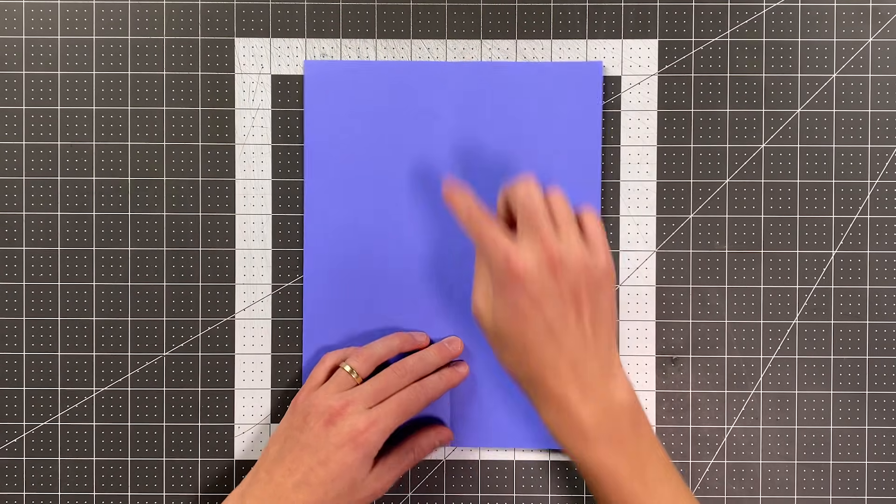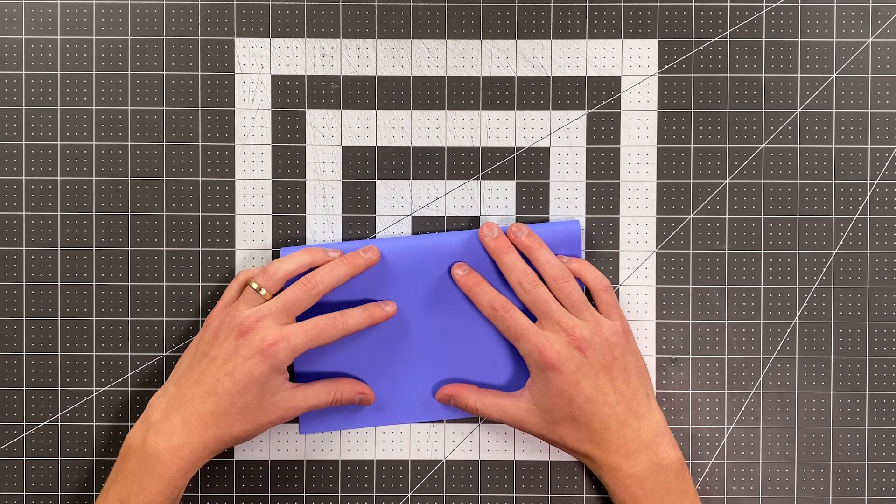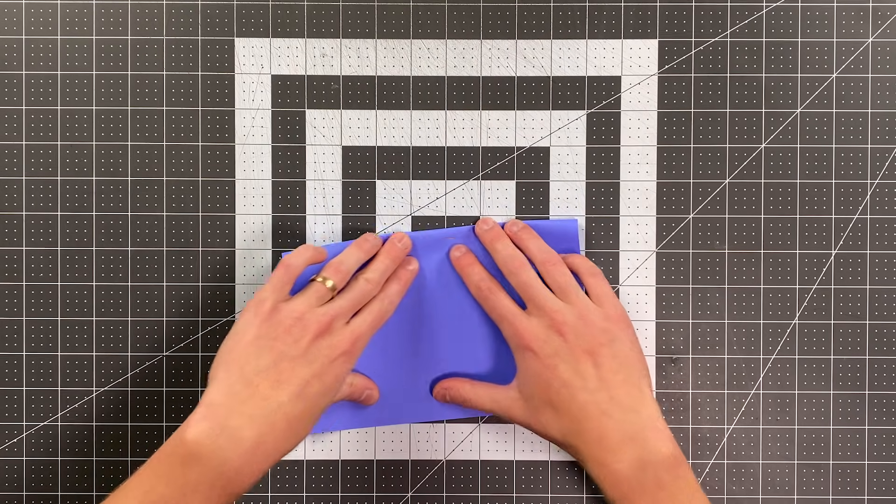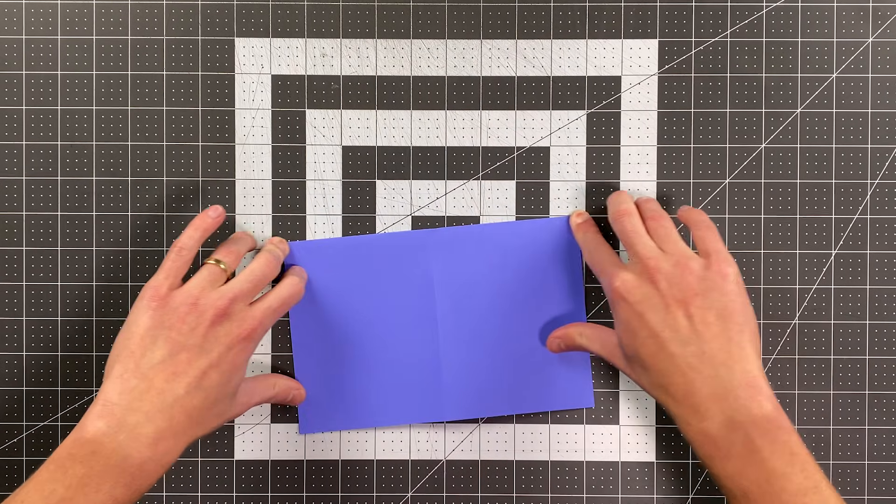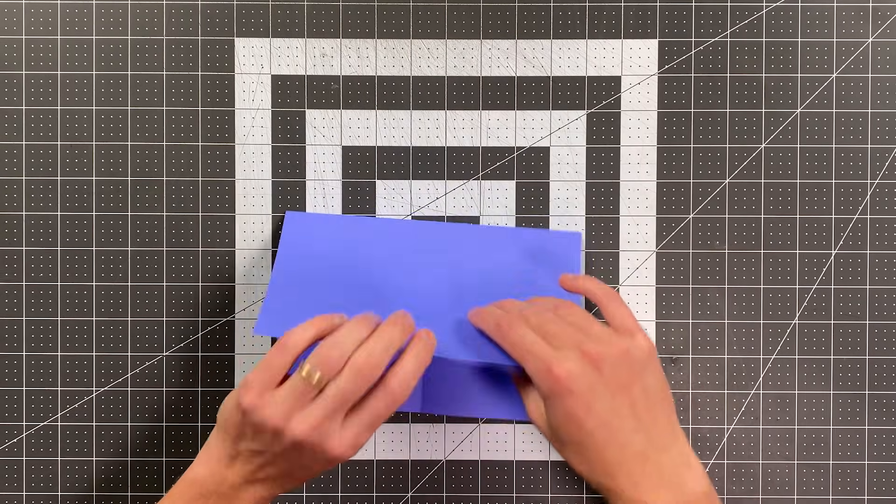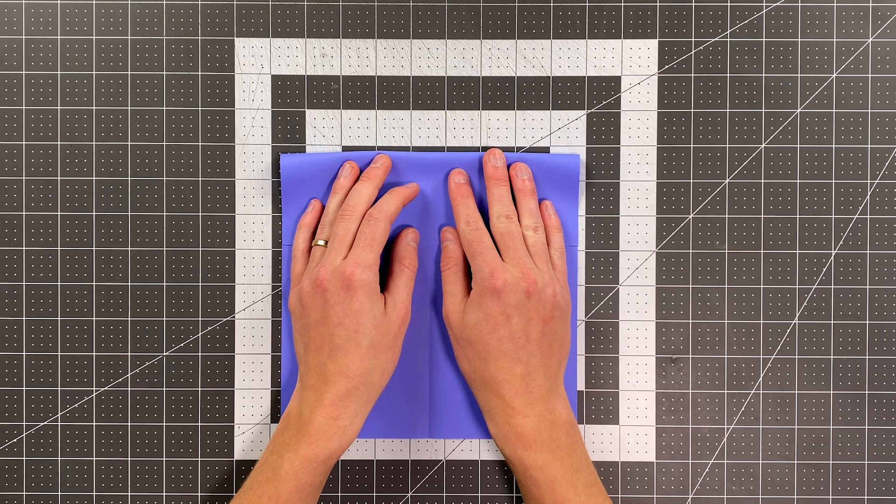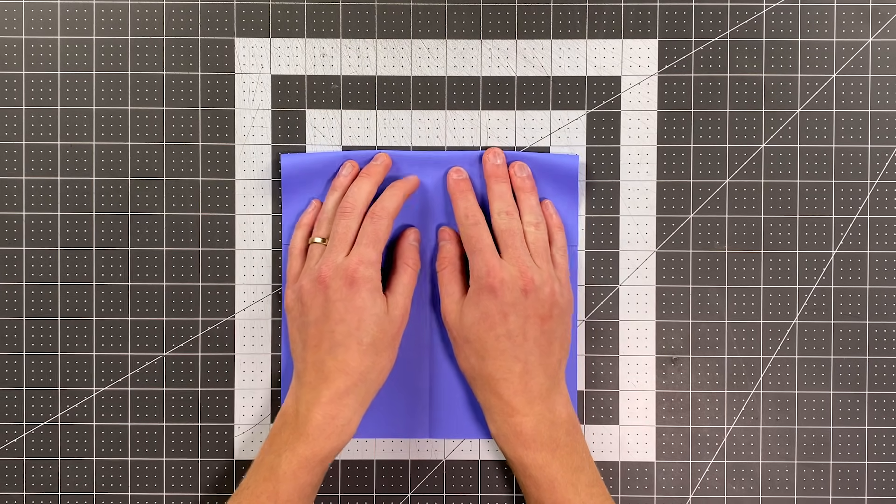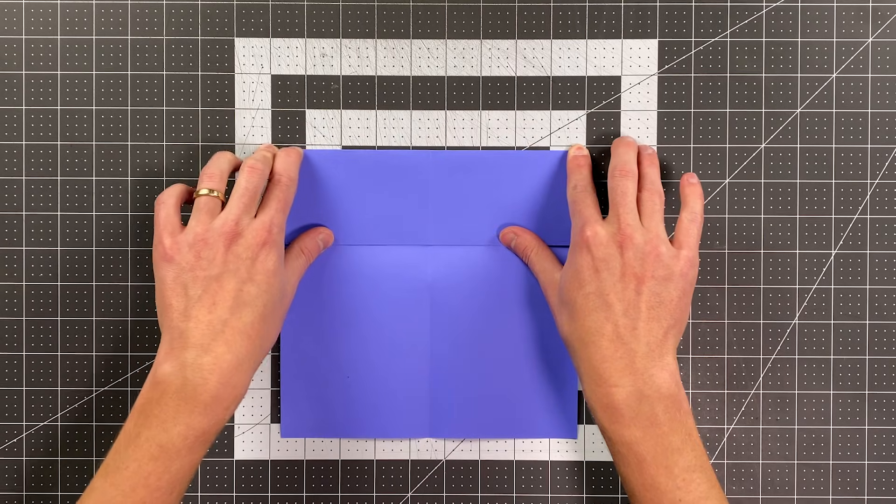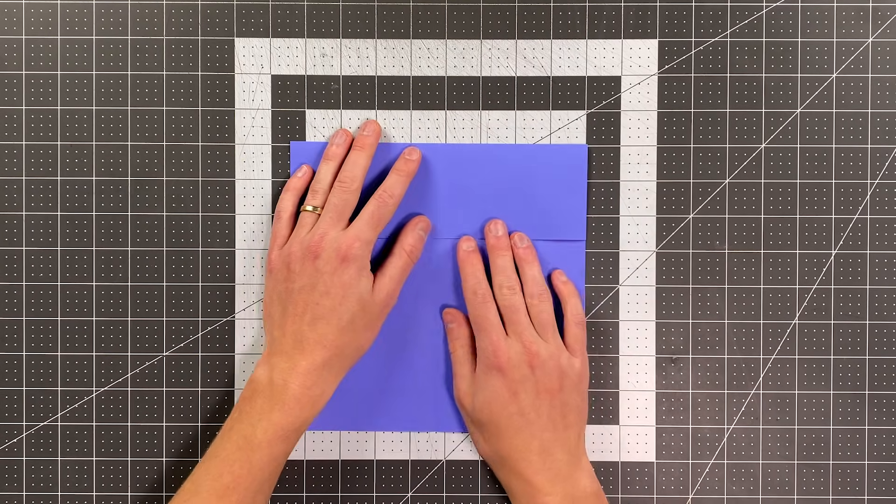Open it up, and now you'll fold your top edge to the bottom. Open it up once again, and now just fold your top edge to that crease you just made, and your paper should look like this.